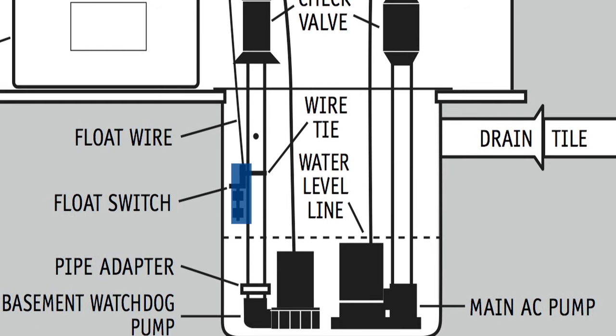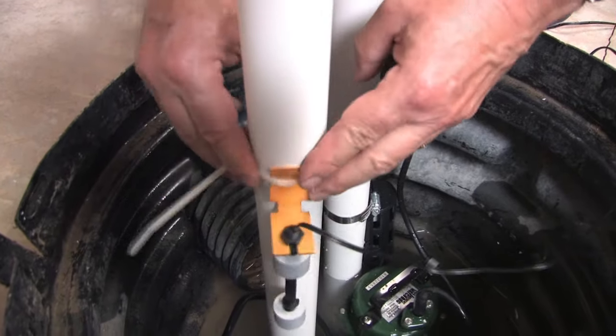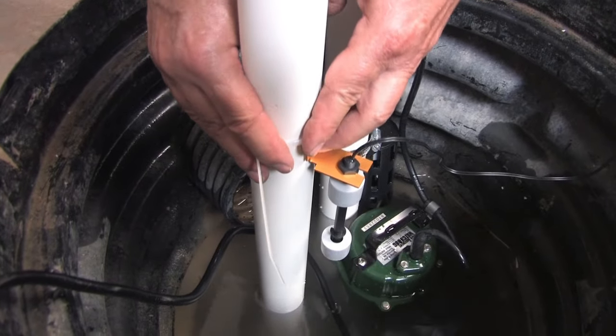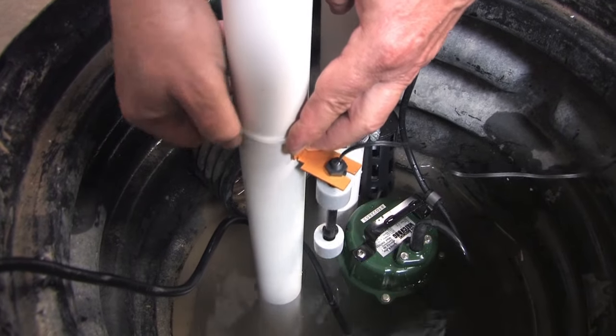The bottom of the float switch should be positioned about 6 inches above the water line in the sump pit. Attach the float switch very securely to the discharge pipe with a wire tie. Turn it away from the side of the pit where the drain tile empties into the sump so it will not be splashed by the water.